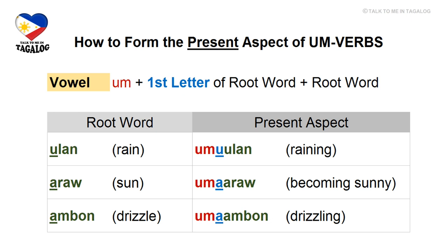Our second example is araw, which means sun. If we want to say it's already becoming sunny, form the present aspect by affixing um before the first letter 'a': um + a + araw = umaaaraw, meaning 'becoming sunny.' Next is ambon, meaning drizzle. Present aspect: um + a + ambon = umaambon, meaning 'drizzling.'